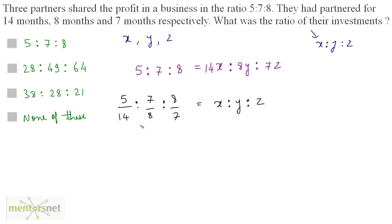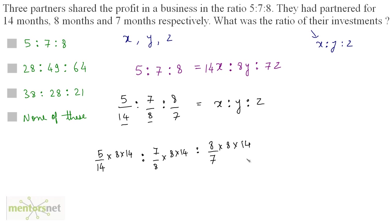Multiply each term of the ratio by 8 times 14 and you will get rid of the denominators. So we have 5 by 14 times 8 times 14, is to 7 by 8 times 8 times 14. This 14 and this 14 gets cancelled out, this 8 and this 8 gets cancelled out, and 7 times 2 is 14.